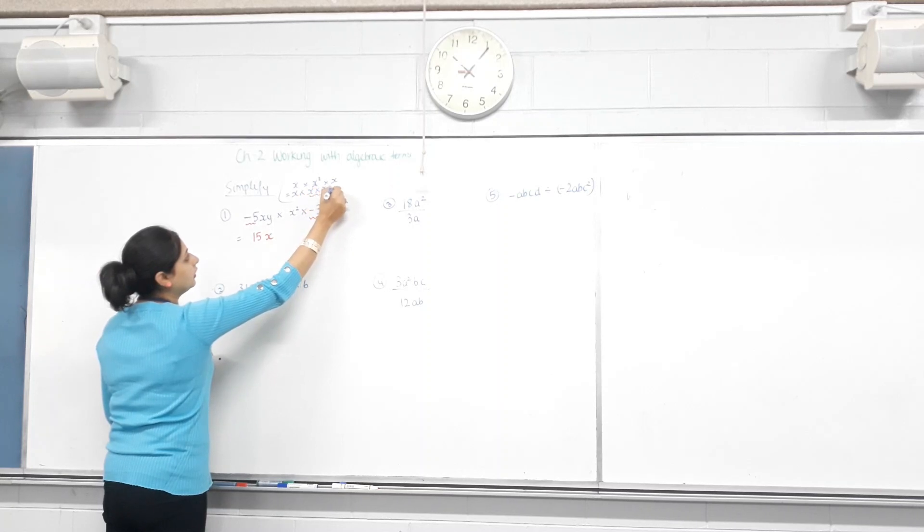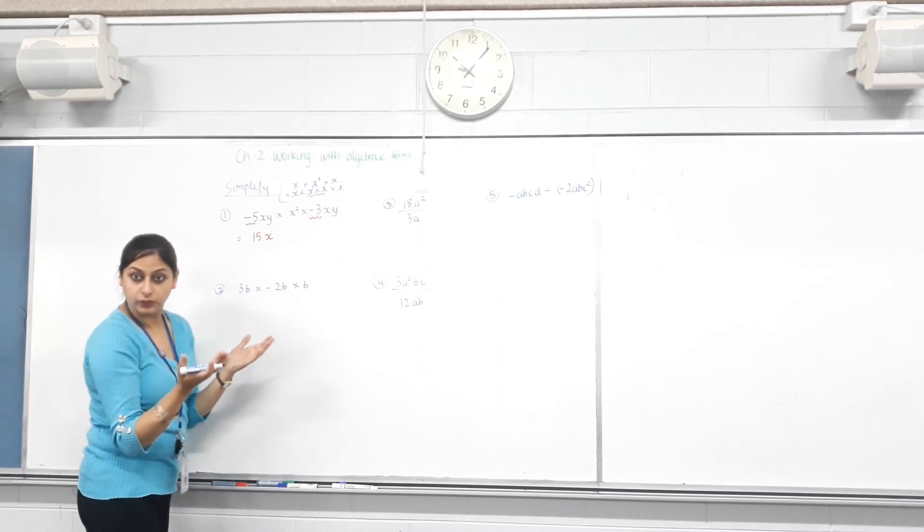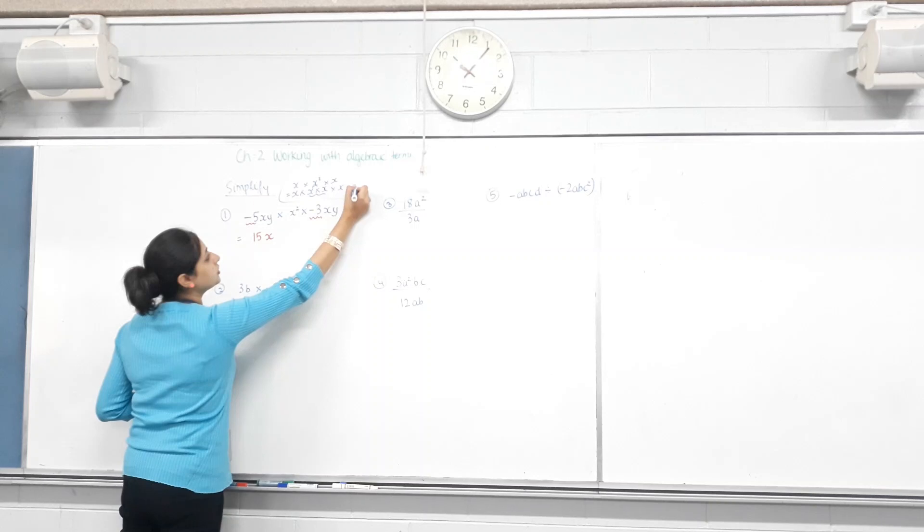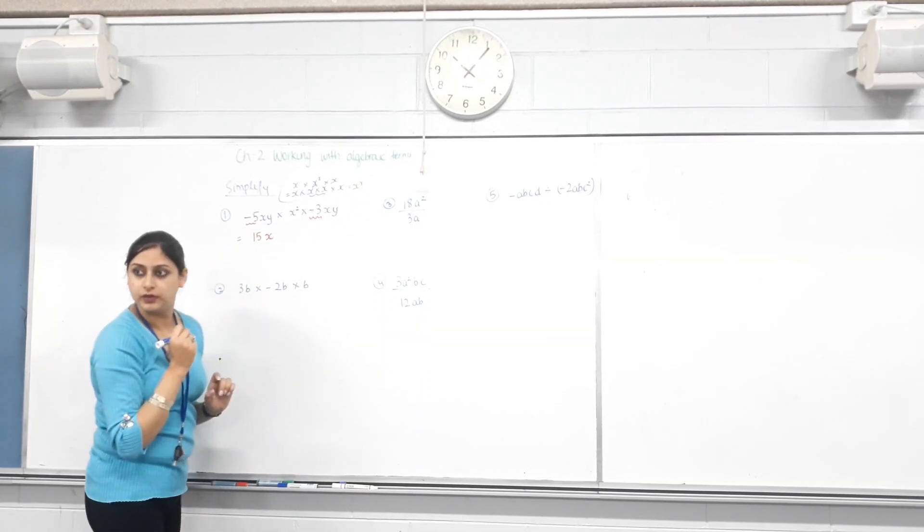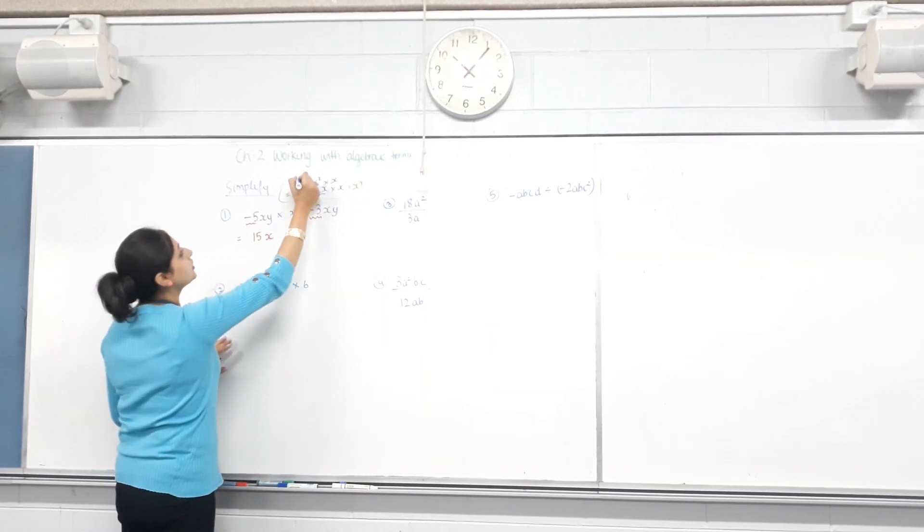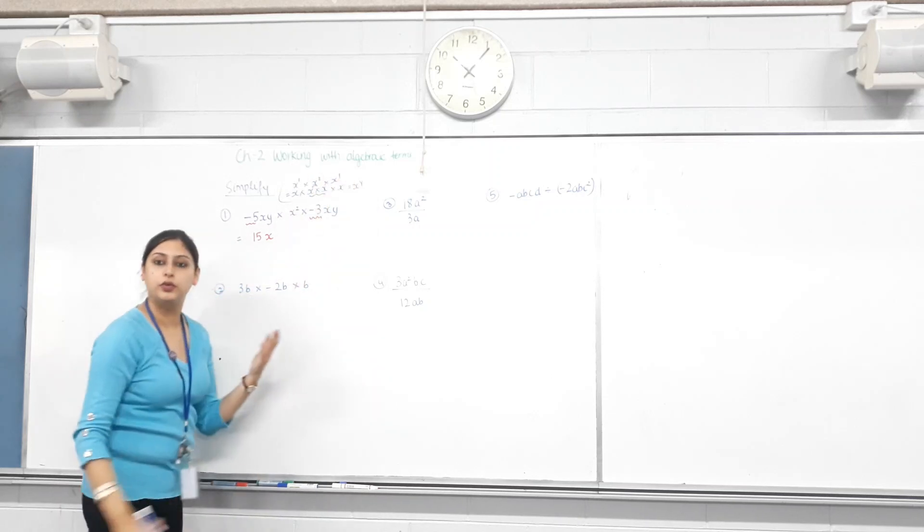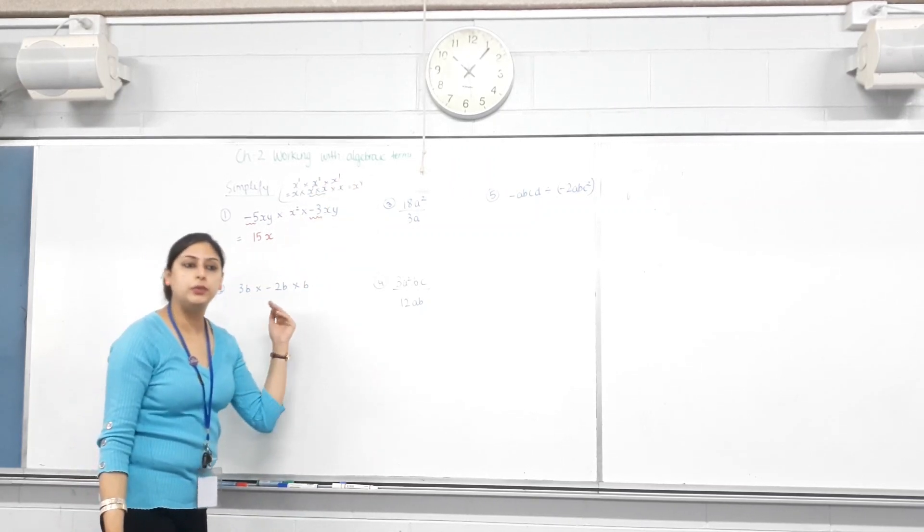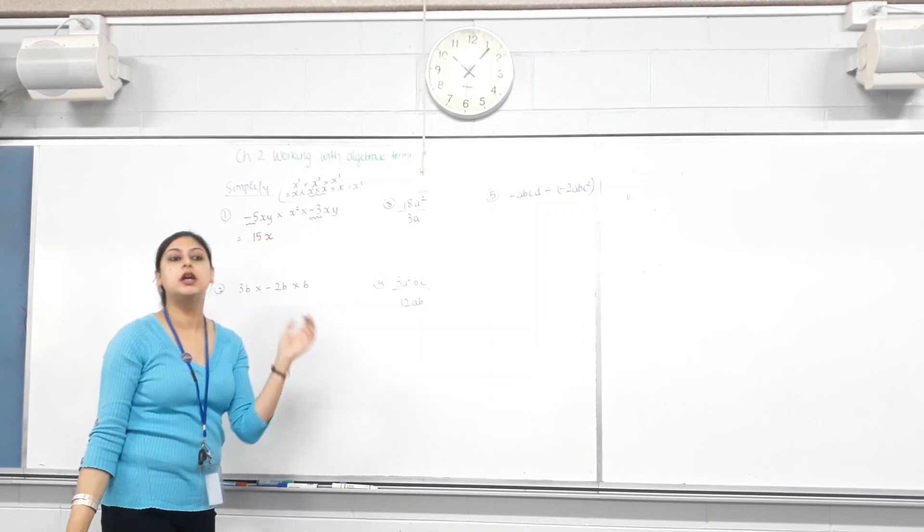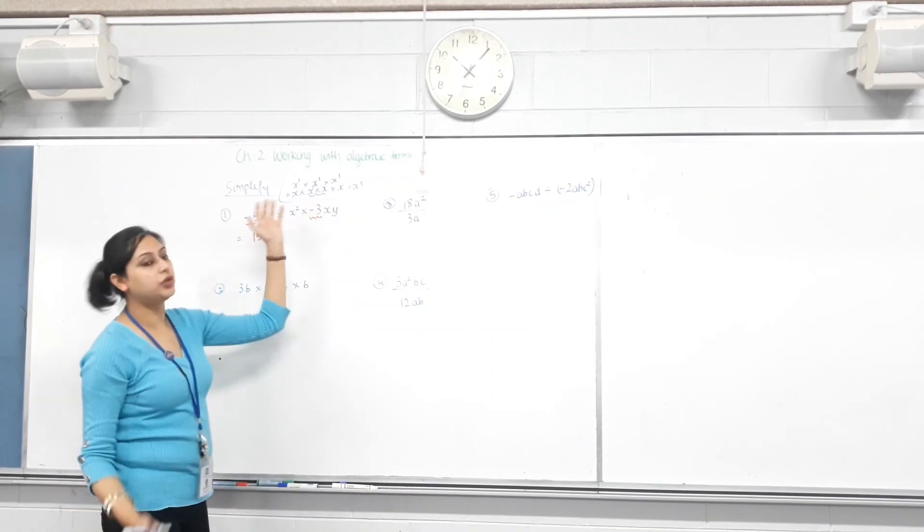So, how many X's do I have now? Four. Can I write this as X to the power of four? Yes. Or the shortcut is, you just add their powers. One plus two plus one is four. Because when you're multiplying them that many times, however many times they're there, you just add them.